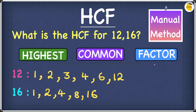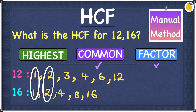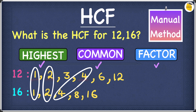Now that we have found the factors, we're going to move on to the common factors. We're going to circle the ones that are in common. 1 is in common, 2 is in common, and 4 is in common. Next, we find the highest number out of 1, 2, and 4 — which is obviously 4. So the HCF for this question is 4.